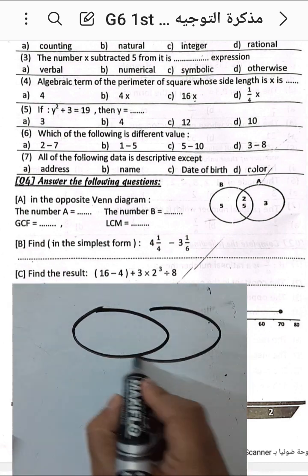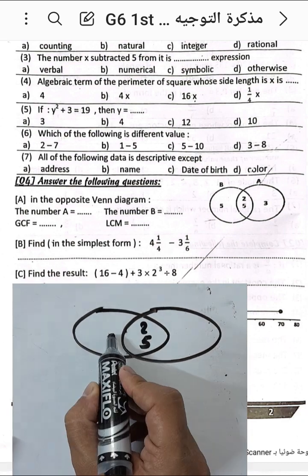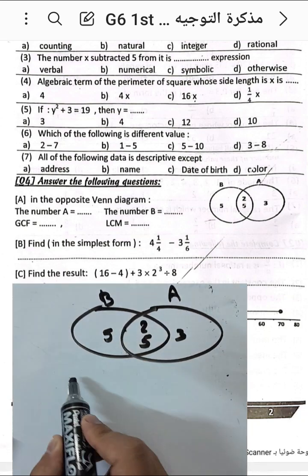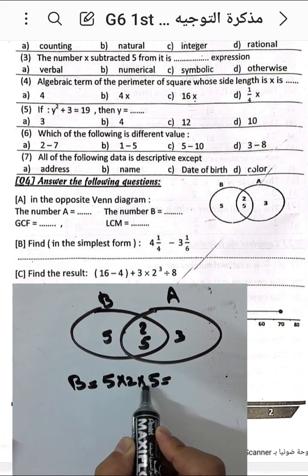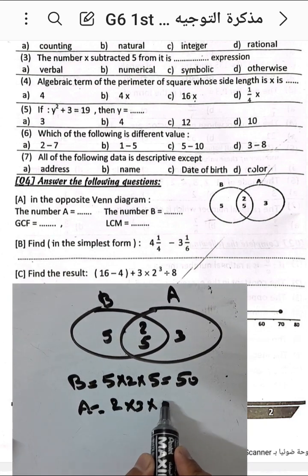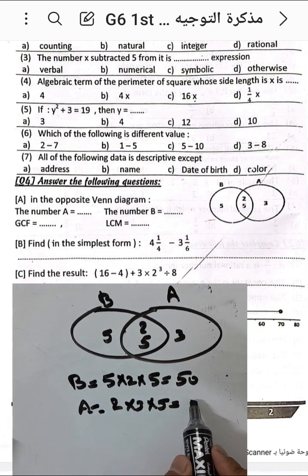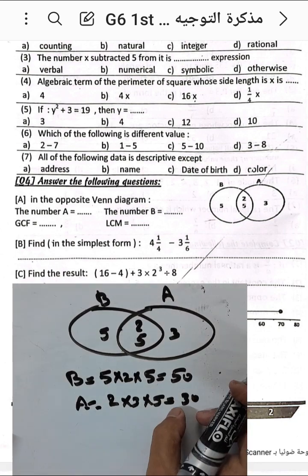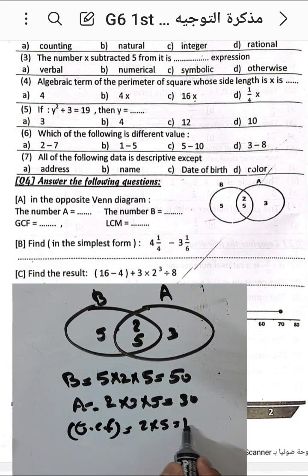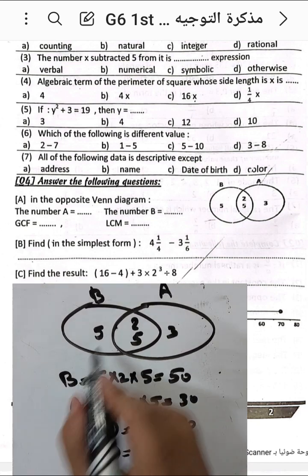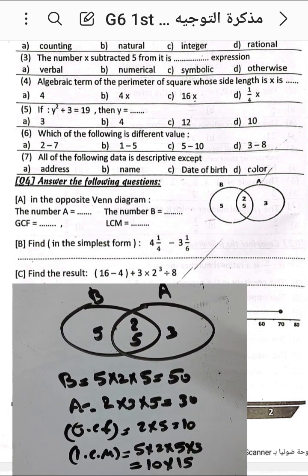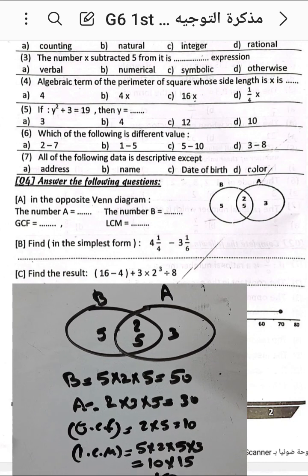Question: from the grid, we have values 2, 5, and 5, 3. We find b as 5 times 2 times 5 equals 50, and a as 3 times 2 times 5 equals 30. The GCF between the two numbers from the factor tree is 2 times 5 equals 10. The LCM is 5 times 2 times 5 times 3, which is 10 times 15 equals 150.